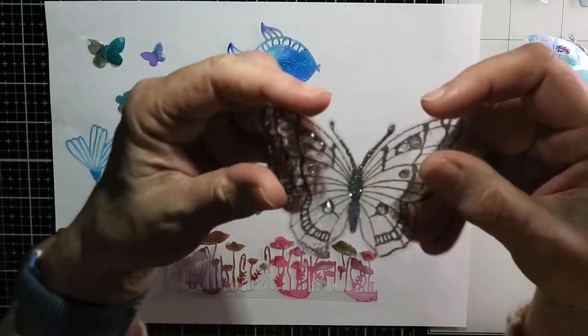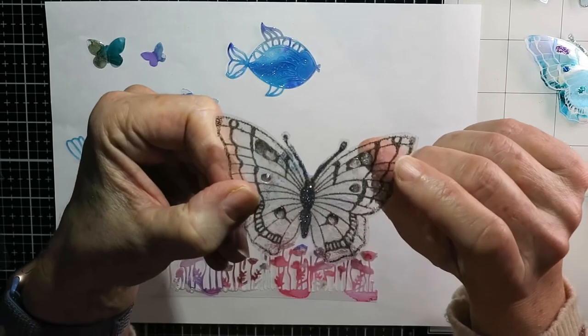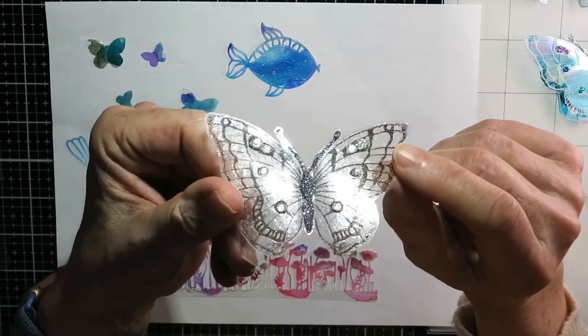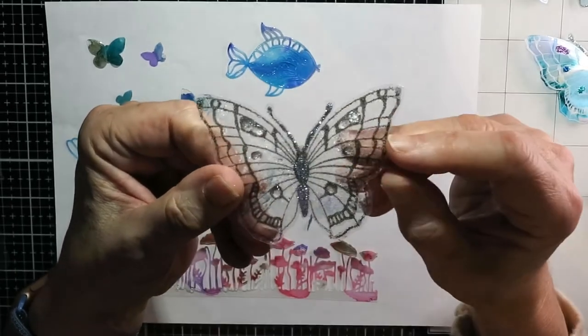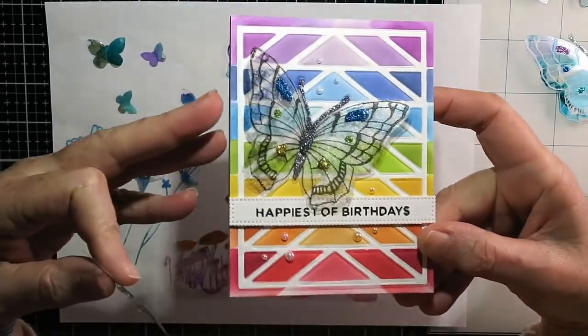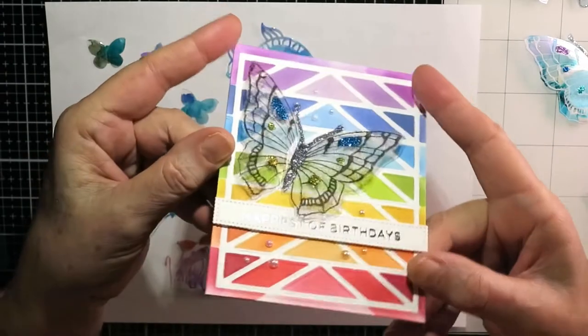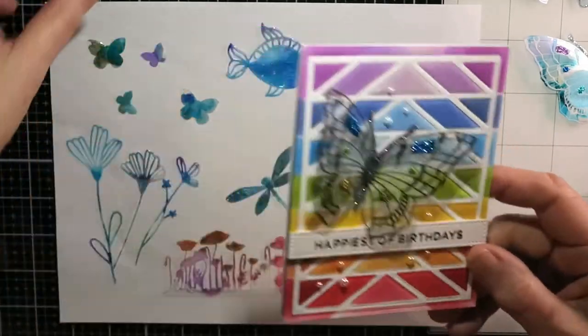And this clear one, I used VersaFine black ink on the inside of the laminating pouch. Let that dry, and then I sprinkled some Tim Holtz crystal glitter into the inside, and then ran it through the laminator. And I felt like that was a better butterfly to use on a more colorful background.